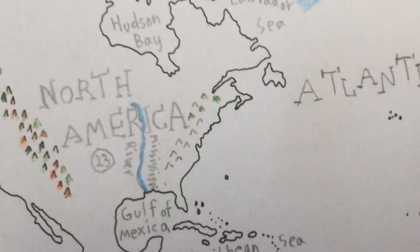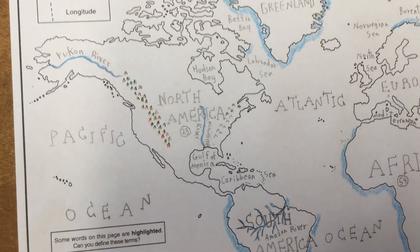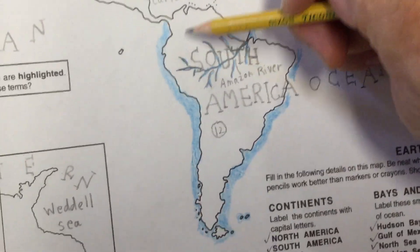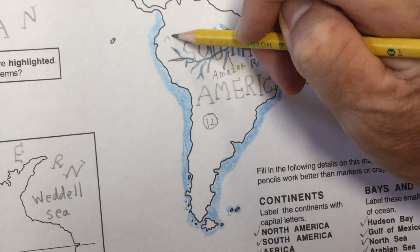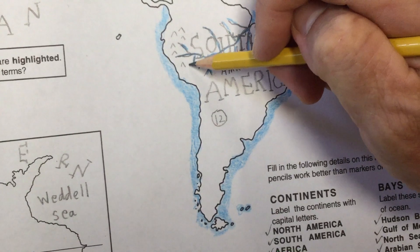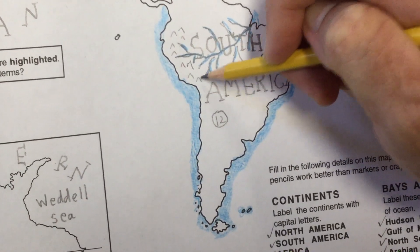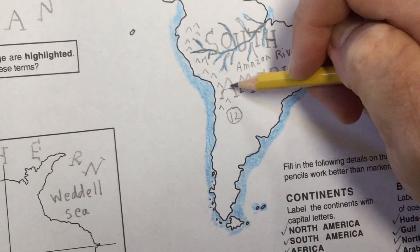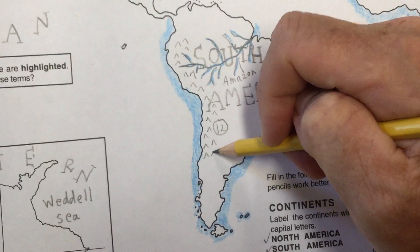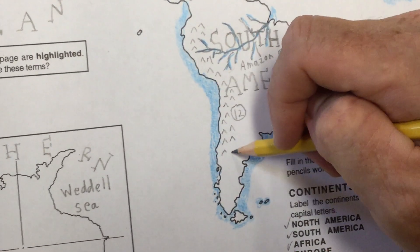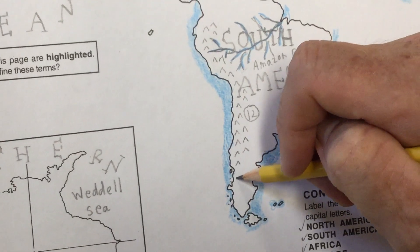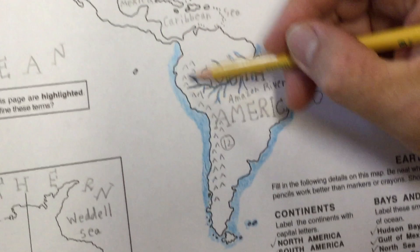Now I'll go to the Andes Mountains, which are located in South America. They're pretty easy to locate — they run right along the western coastline. I'll go one at a time and carefully draw them in. You don't need to put too many; space them out a little bit. That gives a good representation of the mountains.